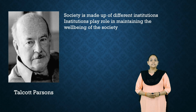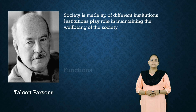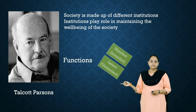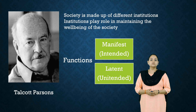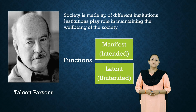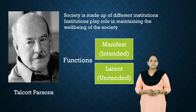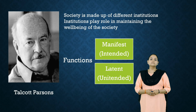Each institution plays a certain role in promoting cooperation and preserving social order. Parsons distinguished between two types of functions: the manifest and the latent. Manifest functions are those whose outcomes are intended and visible. For example, the manifest function of an educational institution is to provide education, degrees, and so on. Whereas latent functions refer to those outcomes that are unexpected and unintended — for education, the latent functions would be social integration and establishing social relations.